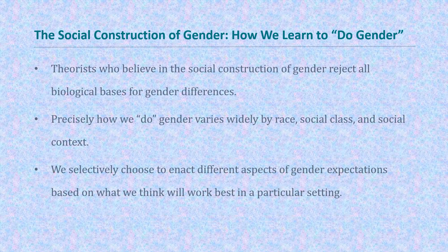The social construction of gender: how do we learn to do gender? Theorists who believe in the social construction of gender reject all biological basis for gender differences. Precisely how we do gender varies widely based on race, social class, and social context. We selectively choose to enact different aspects of gender expectations based on what we think will work best in a particular setting.